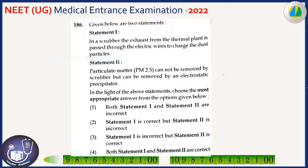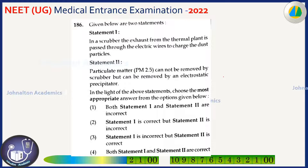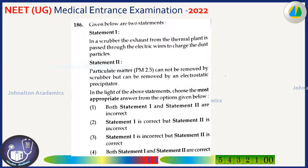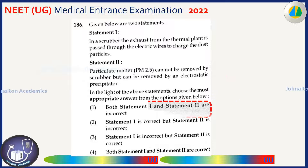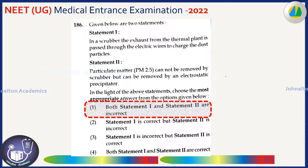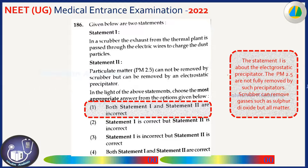Two statements are given. In a scrubber, exhaust from a thermal plant is passed through electric wires — no, that is not a scrubber; that is an electrostatic precipitator. Particulate matter PM 2.5 cannot be removed by a scrubber, but can be removed by an electrostatic precipitator — that is also incorrect, because an electrostatic precipitator also cannot remove all PM 2.5. Both statements are incorrect.